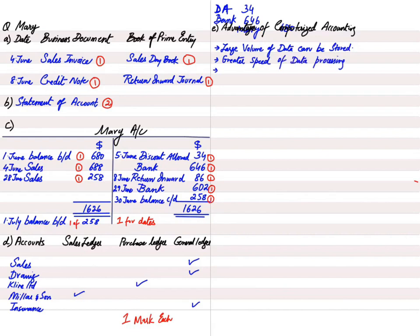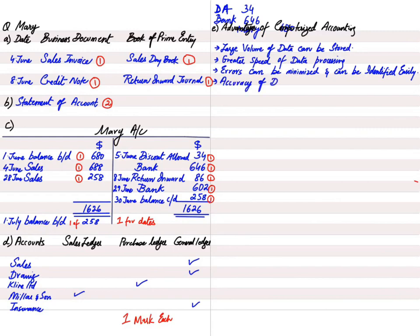A second advantage is greater speed of data processing — data can be processed much faster than with manual accounting. Third, errors can be minimized or more easily identified; we cannot completely eliminate errors, but computerized accounting helps manage and reduce them. Finally, there is greater accuracy — data processed using computerized accounting is far more accurate than data processed manually.